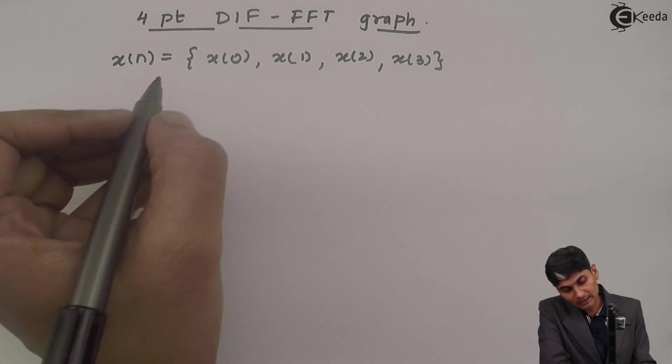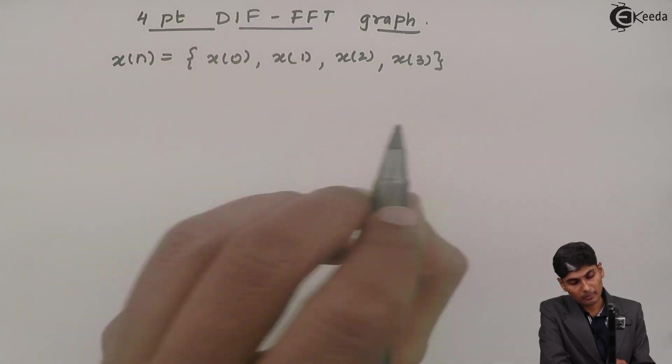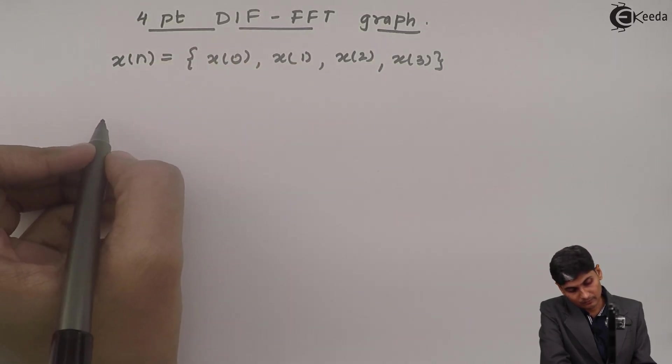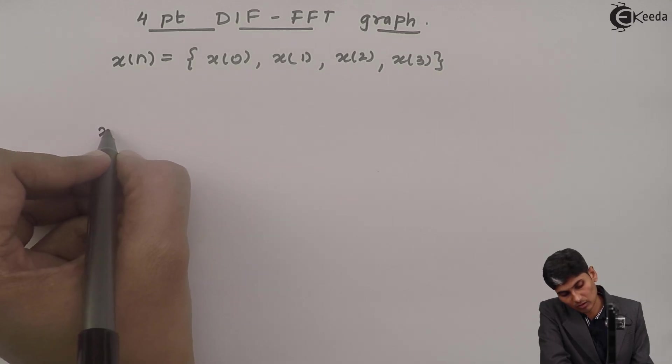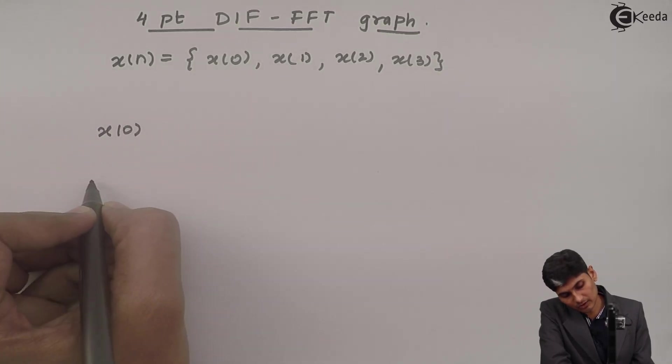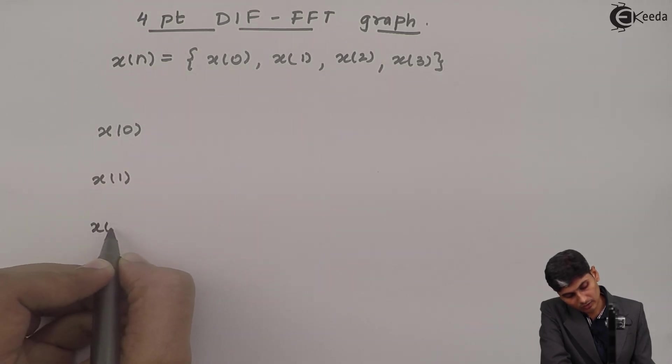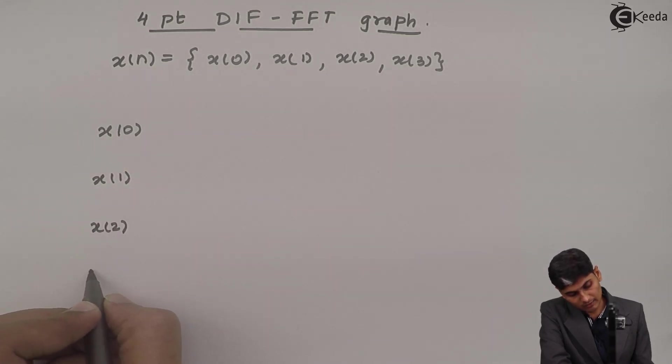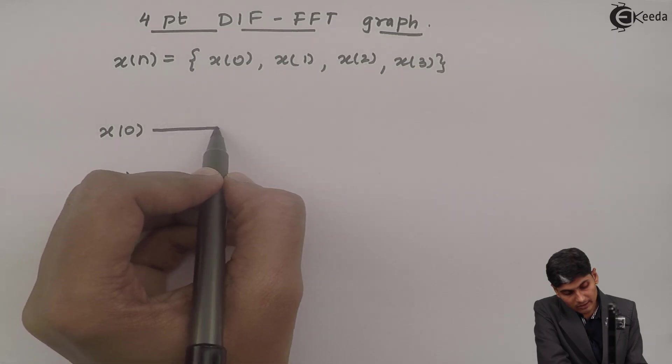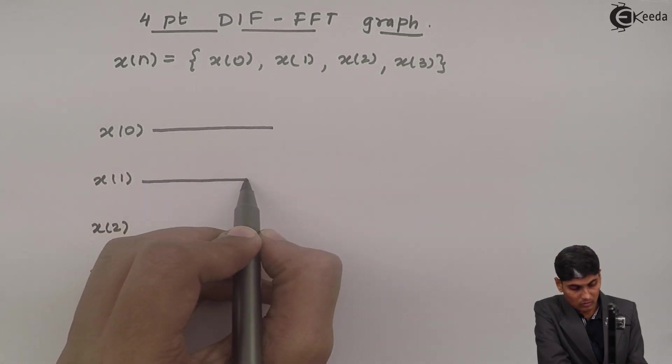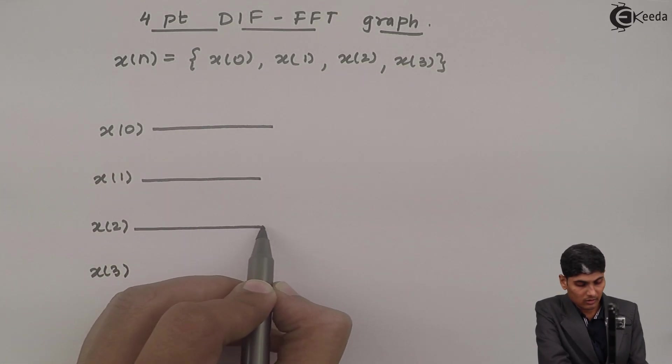Then in DIF FFT, the input, that is the time samples, are placed in order. I have x of 0, then I have x of 1, then I have x of 2 and I have x of 3. So they all are in order. They are taken together, all 4 of them taken together.